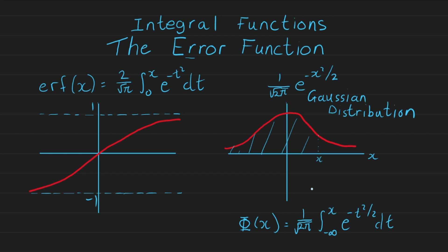Many things can be described using the Gaussian distribution, not just errors. The key point is that the term 'error function' comes from the fact that we can model errors using the Gaussian distribution, and when we integrate it we get the probability of a cumulative error falling within a certain range.